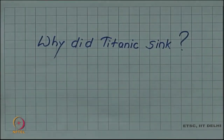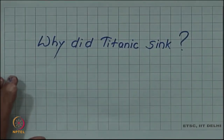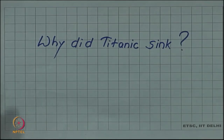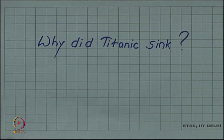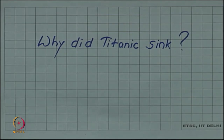The question is: why did Titanic sink, and why did it sink so easily? It was made of steel and it was hitting an iceberg made of ice. Whenever we try to break ice blocks, we use a steel hammer — steel does not break, the ice breaks. But in this case, a much thicker hull made of much thicker steel hit an iceberg and it broke into two.